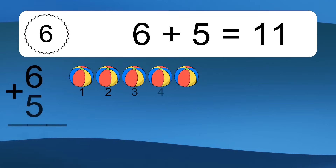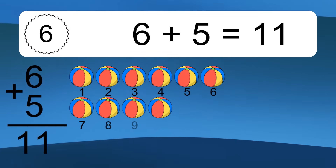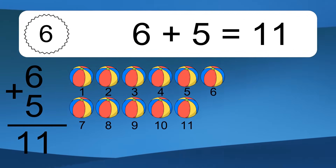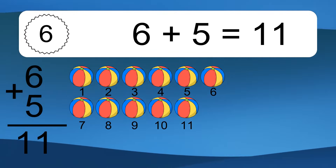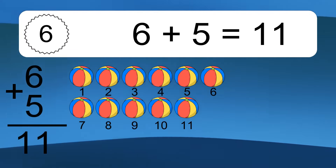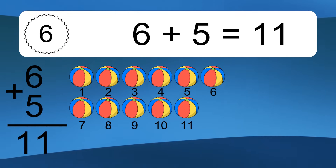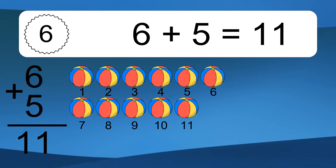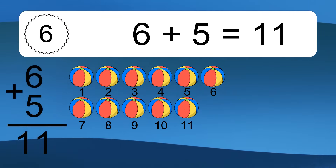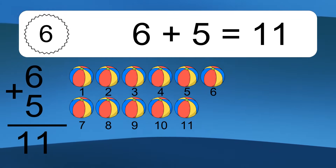6 plus 5 equals 11. Let's count it. 1, 2, 3, 4, 5, 6, 7, 8, 9, 10, 11.